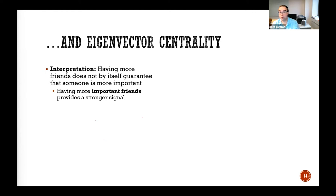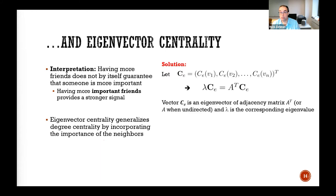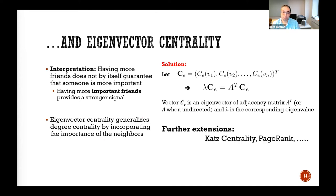You can generalize this and say not only should a node have more connections, but it should have connections to more important people — think of a social network. In this case you get eigenvector centrality, and the solution boils down to getting the eigenvalues and eigenvectors of the adjacency matrix, and that eigenvector becomes your representation. You can extend this to KATZ centrality, which adds a base case centrality importance, or PageRank where your centrality gets divided among your neighbors.